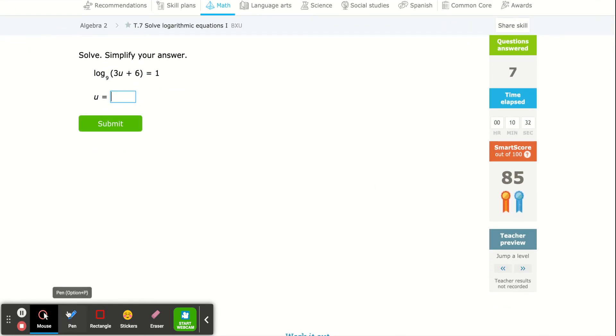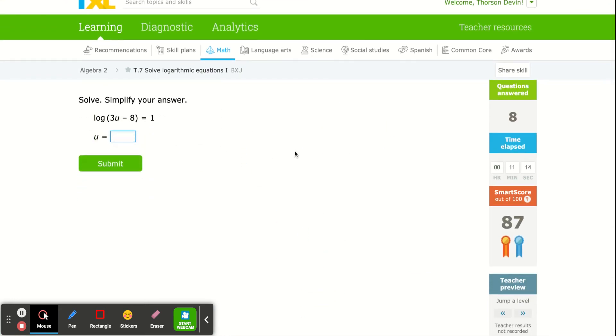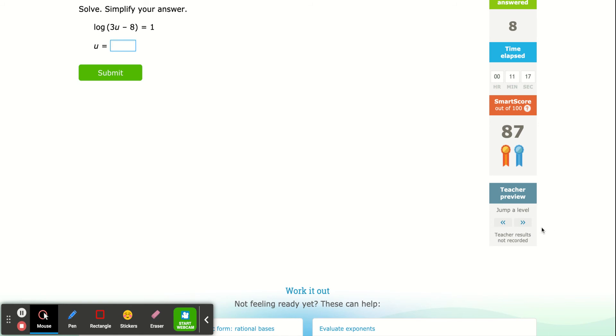This one has algebra afterwards. First we'll write it in exponential form: 9 to the 1 power equals 3u plus 6, because that's the base raised to the exponent equals the argument. Now there's algebra after converting. Minus 6 to the other side gives 3 equals 3u. Divide by 3 gives u equals 1. Sometimes the algebra comes after rewriting the expression.